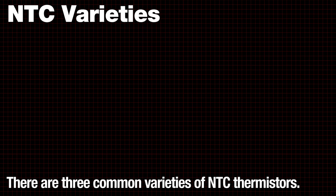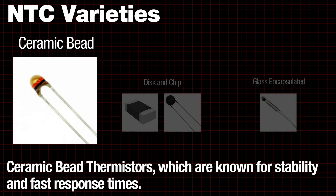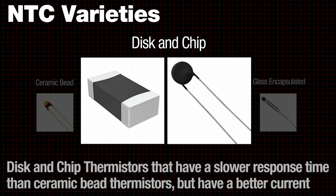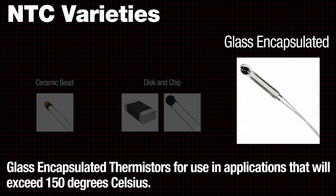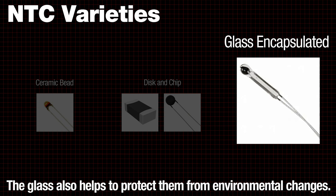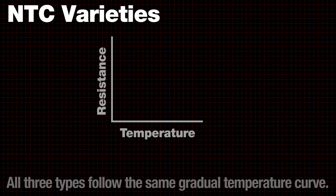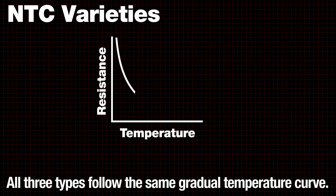There are three common varieties of NTC thermistors. Ceramic bead thermistors, which are known for stability and fast response times. Disc and chip thermistors, that have a slower response time than ceramic bead thermistors but have a better current handling capacity — this is often the package used for inrush current limiting applications. And glass encapsulated thermistors for use in applications that will exceed 150 degrees Celsius; the glass also helps to protect them from environmental changes. All three types follow the same gradual temperature curve.